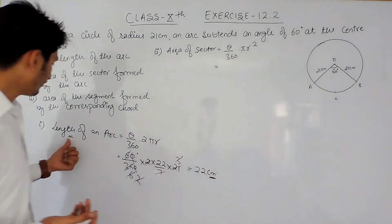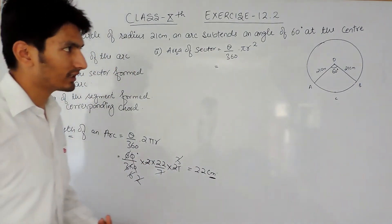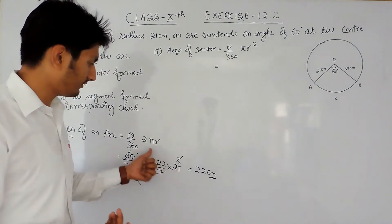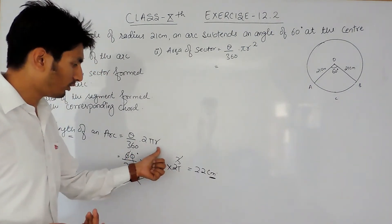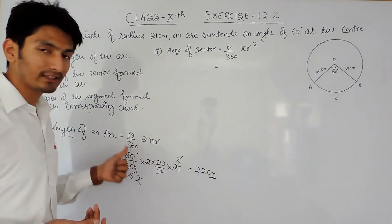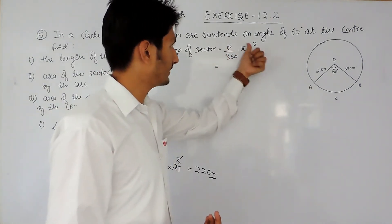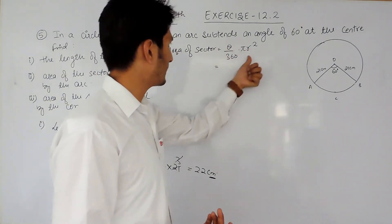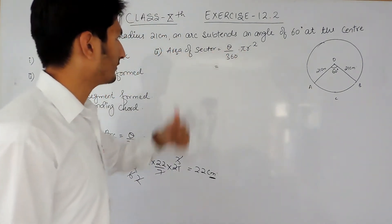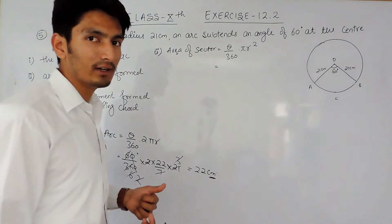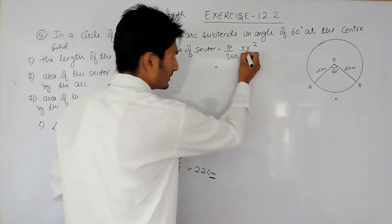This is how we can remember these formulas: if you want to find the length of the arc, the arc is part of the circumference, so we use the circumference formula; theta/360 remains as it is. Similarly, to find the area of the sector, we use the area of the circle formula, multiplied by theta/360.